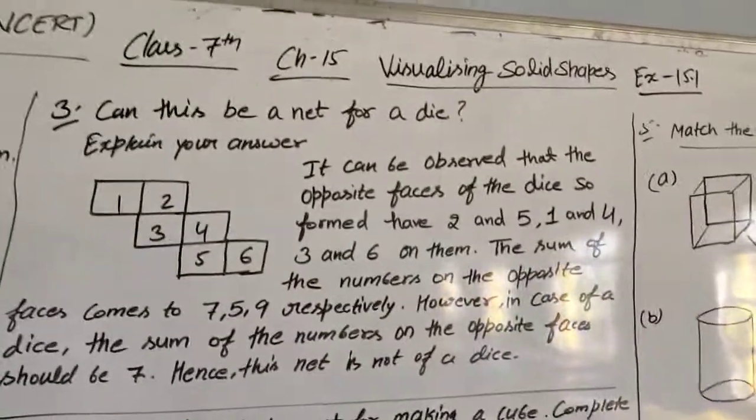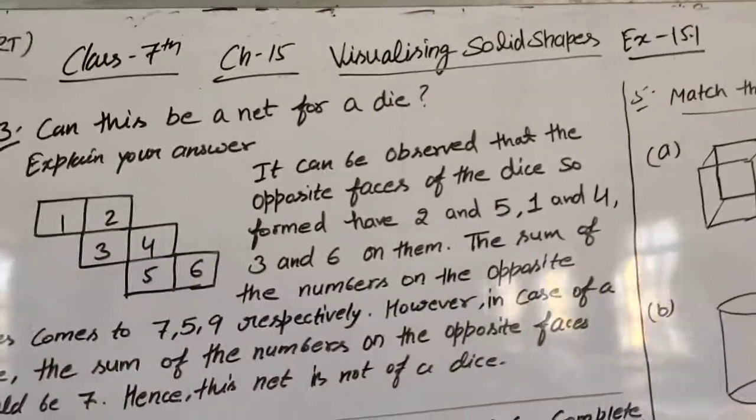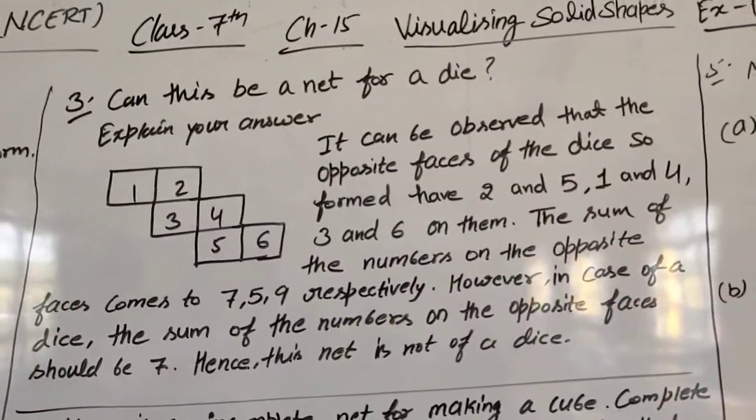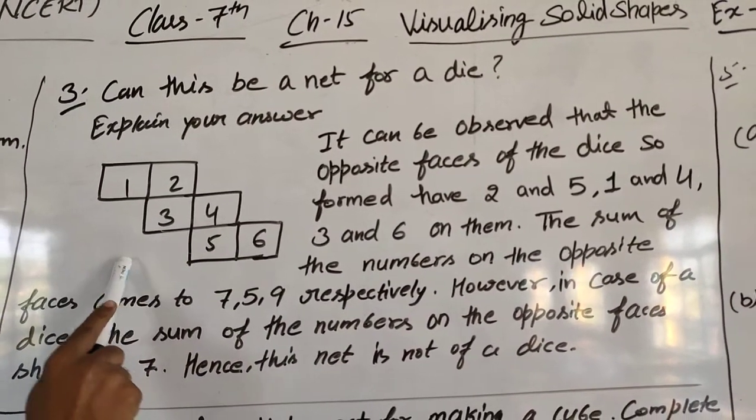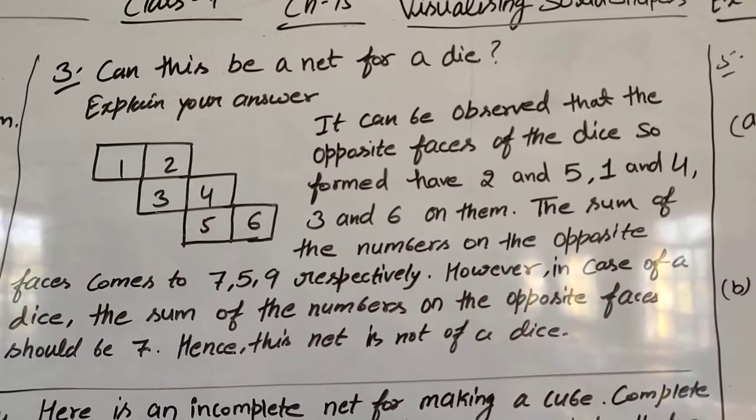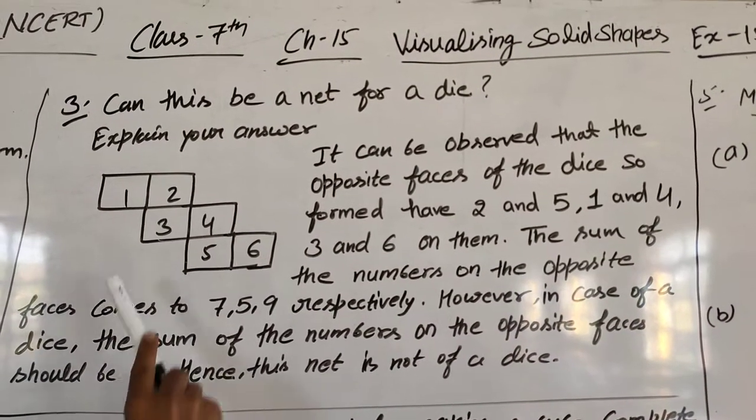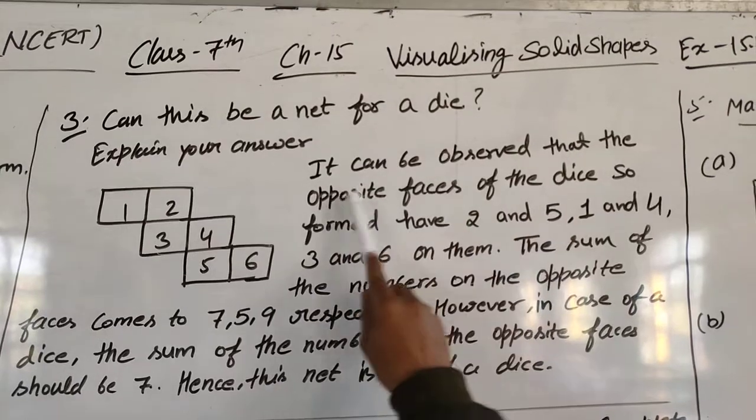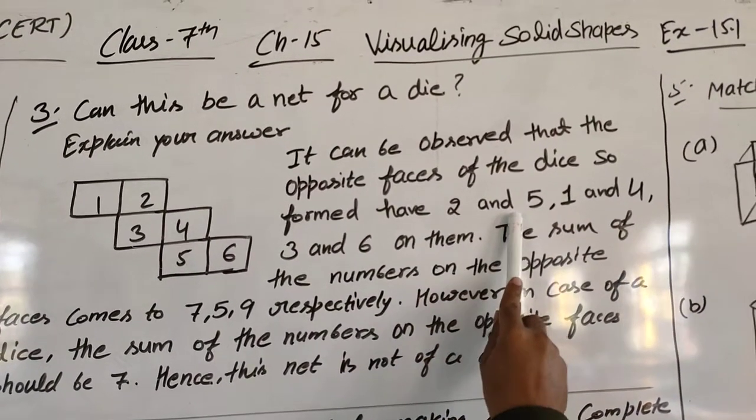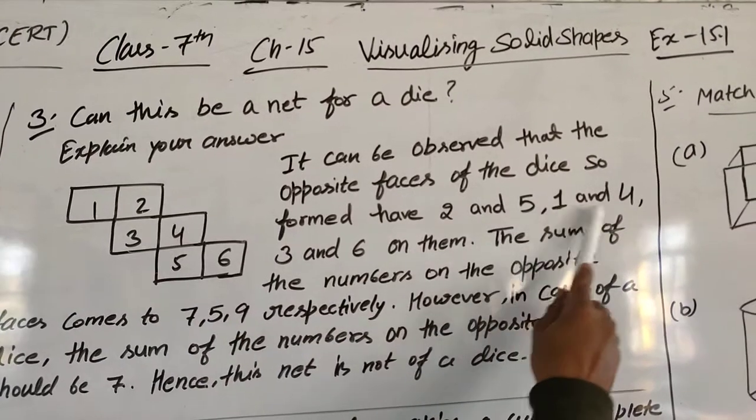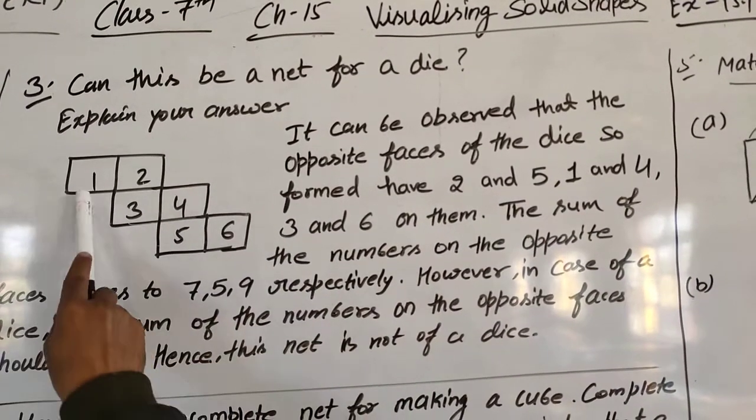Question number 3: Can this be a net for a dice? Explain your answer. So it is 1, 2, 3, 4, 5, 6. It is the given net and we have to find if it is correct or not. It can be observed that the opposite faces of the dice so formed have 2 and 5, 1 and 4, and 3 and 6.